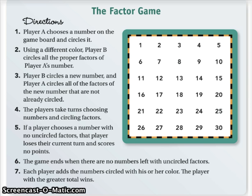The game ends when there are no numbers left with uncircled factors. Even if numbers remain on the board, you might not be able to use them because there won't be any factors left for them. Each player adds up the numbers circled in their color, and the player with the greater total wins. Those are the directions — take a few more seconds to reread them before we play.